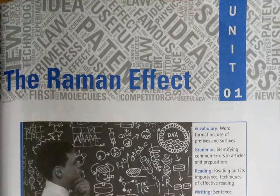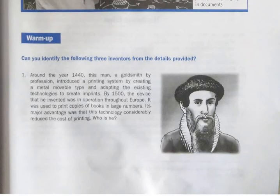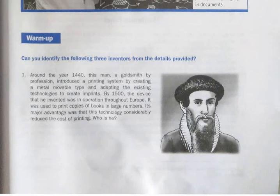First we have a warm-up session. Can you identify the following three inventors from the details provided? Around the year 1440, this man, a goldsmith by profession, introduced a printing system by creating a metal movable type and adapting the existing technologies to create imprints. By 1500, the device that he invented was in operation throughout Europe. It was used to print copies of books in large numbers. Its major advantage was that this technology considerably reduced the cost of printing. Who is he?